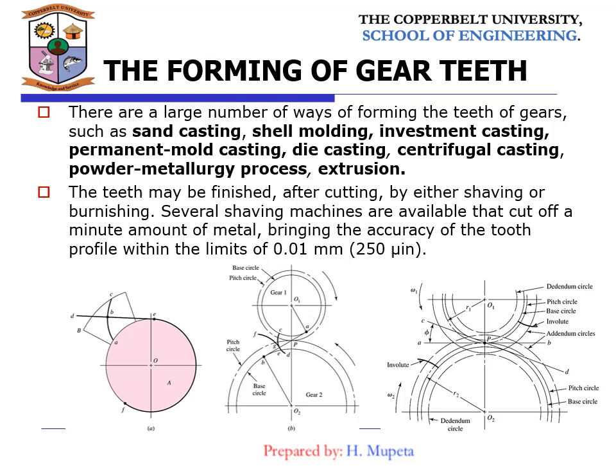There are a large number of ways of forming the teeth of gears, including sand casting, shell molding, investment casting, permanent mold casting, die casting, centrifugal casting, and others. The teeth may be finished after cutting by either shaving or burnishing. Shaving machines cut off a small amount of metal, keeping the accuracy of the tooth profile within a limit of 0.01 millimeters or 250 micro-inches, as shown in the three figures on this slide.